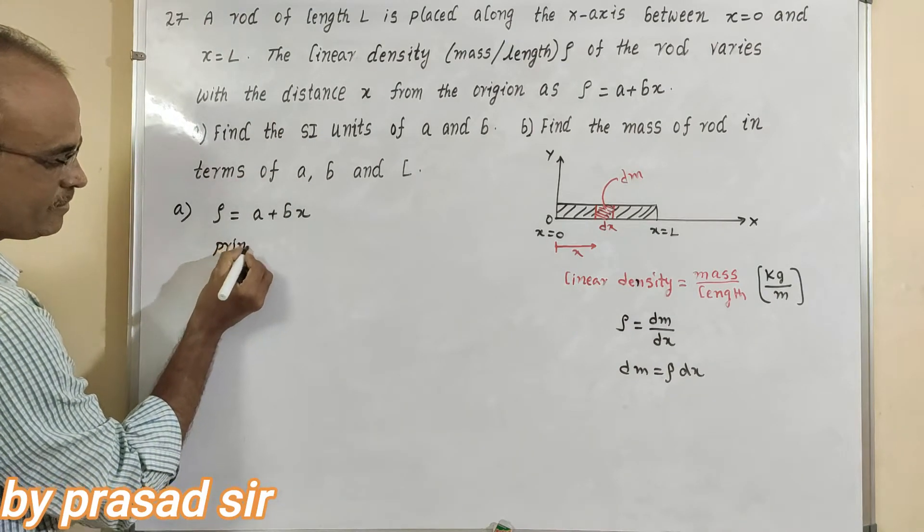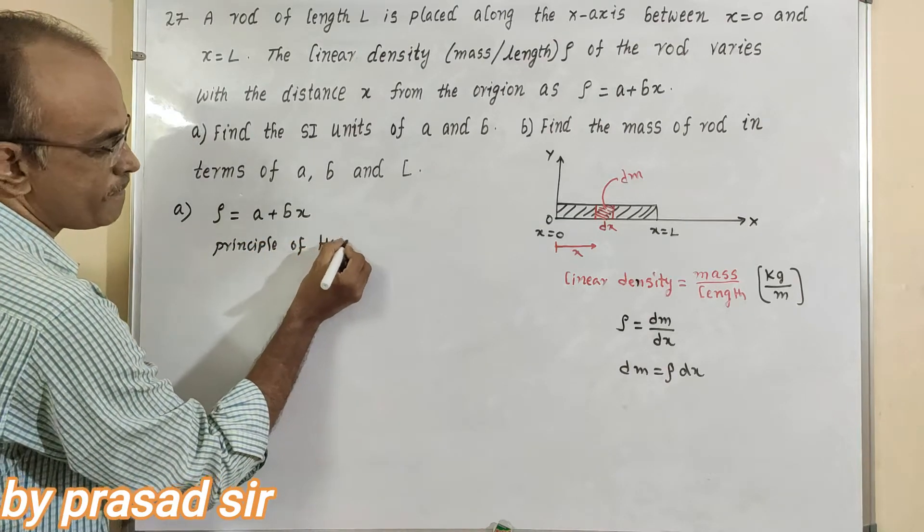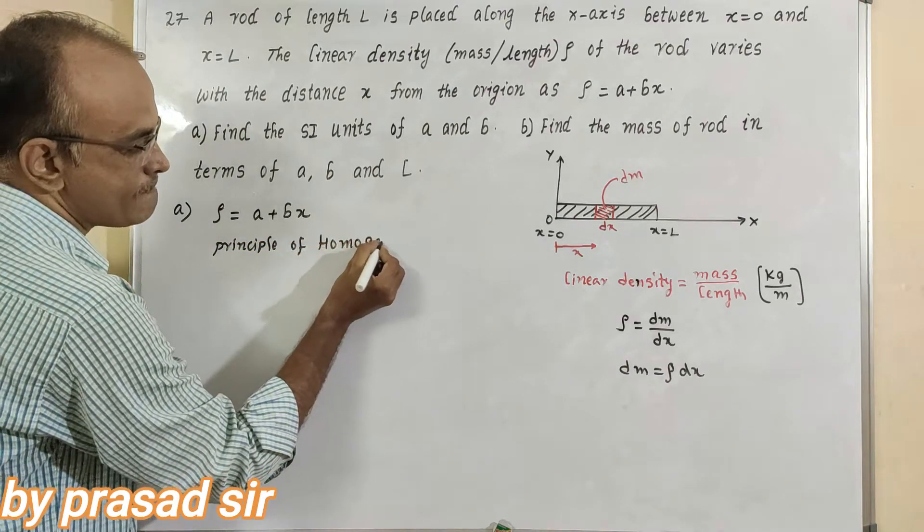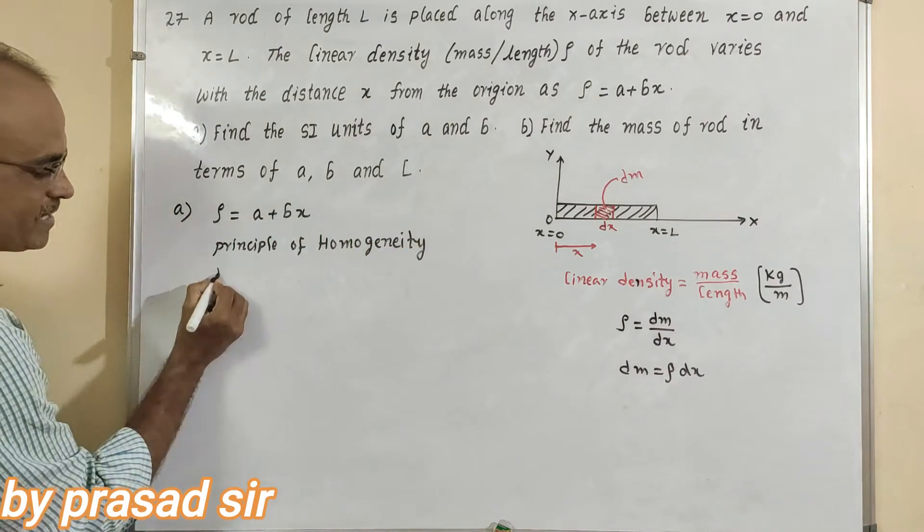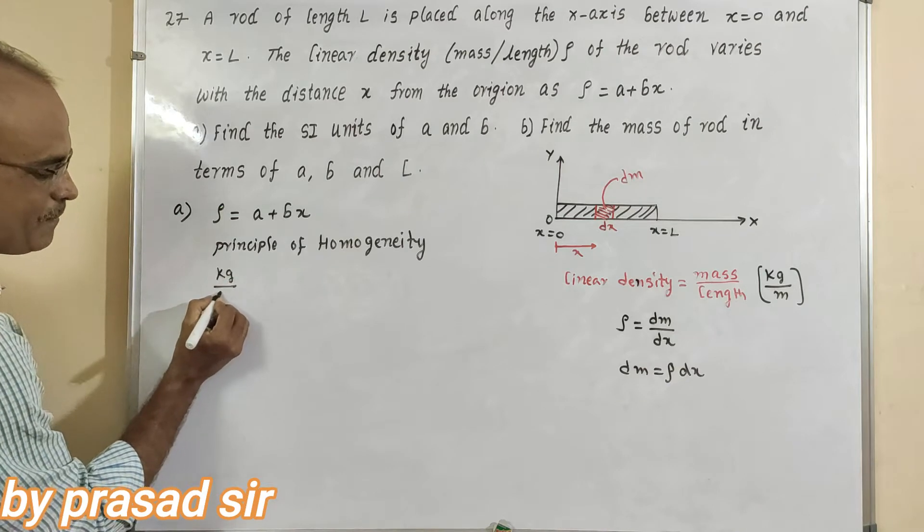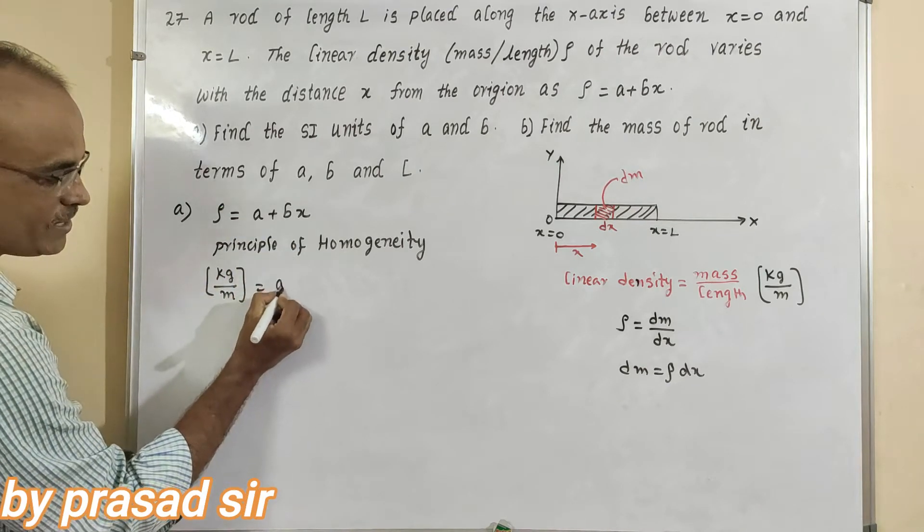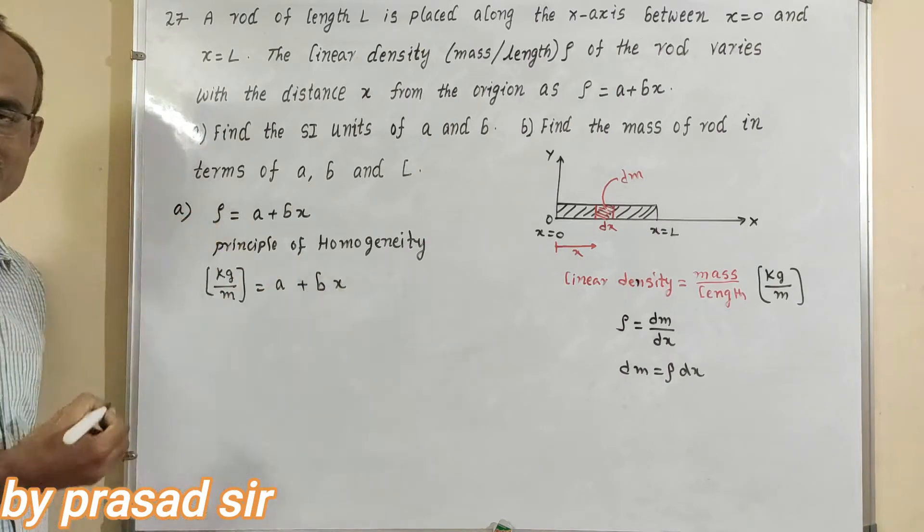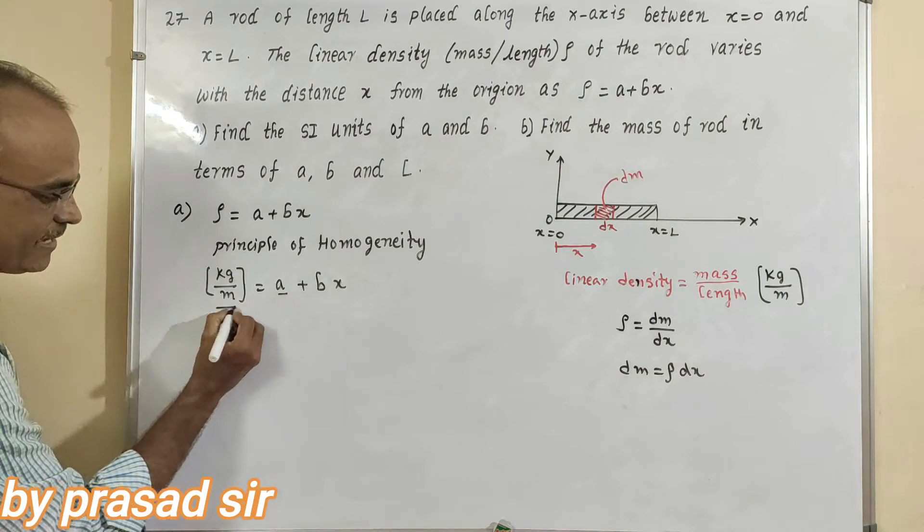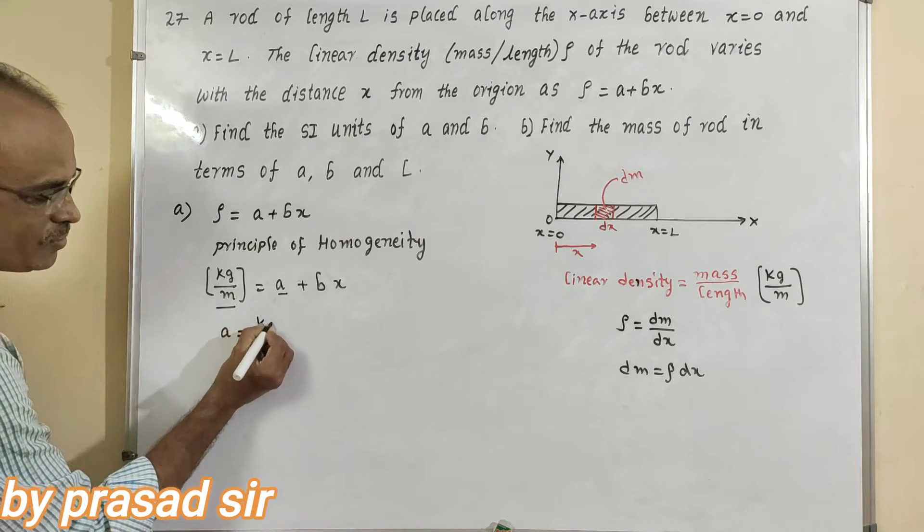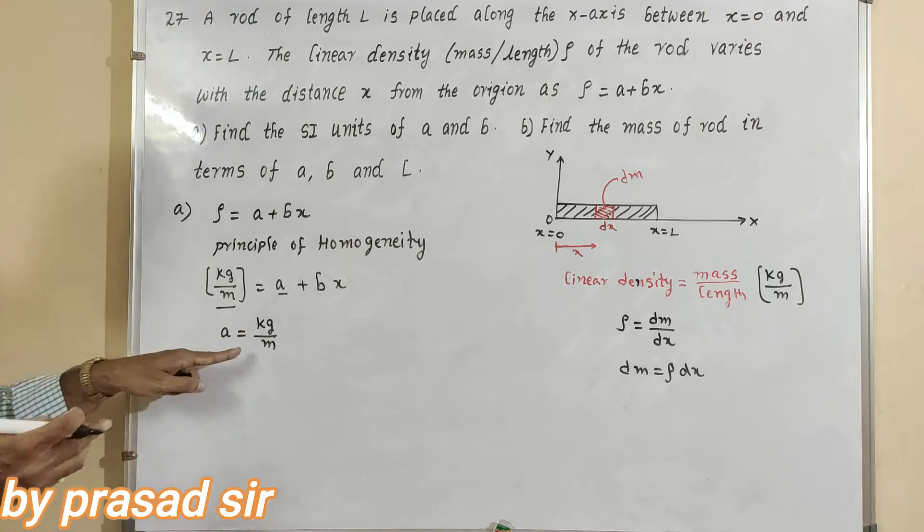According to principle of homogeneity, here rho means kilogram by meter equals A plus B into x. Now according to principle of homogeneity, A equals kilogram by meter. It is the SI unit of A.